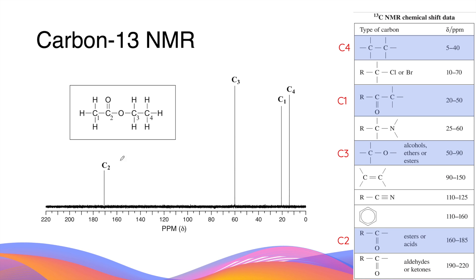The relative position or the chemical shift of each signal can be accounted for by looking at the chemical shift data that's in the data sheet.